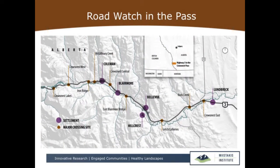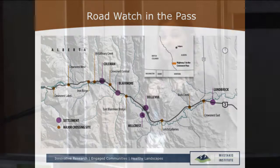The next map shows all those little orange dots indicating where in the Crowsnest Pass we need to mitigate for the safe passage of wildlife. Citizens played a very big role in gathering that data. From a scientific perspective, goal accomplished.